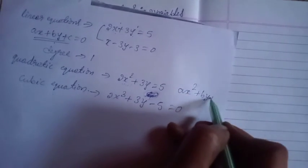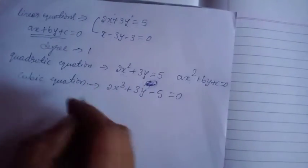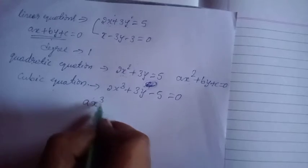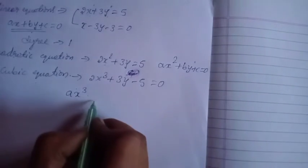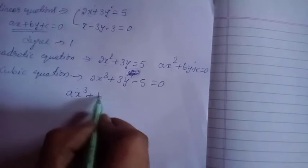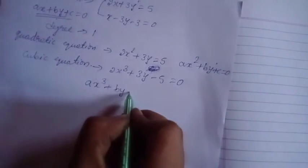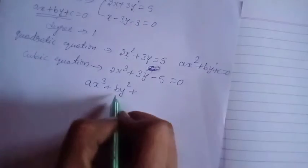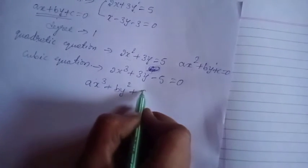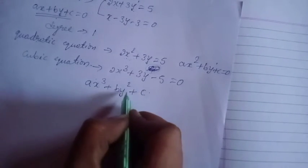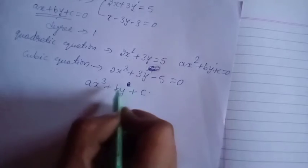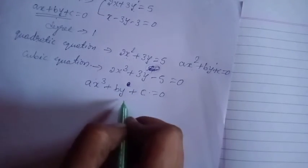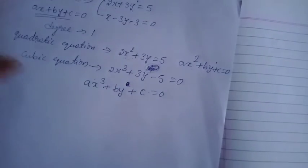This is the standard form of linear equation. Coming to the quadratic equation, degree 2 means ax squared plus by plus c is equal to 0. That is the quadratic equation standard form. Similarly, for the cubic: ax cubed — degree 3 means cubic.